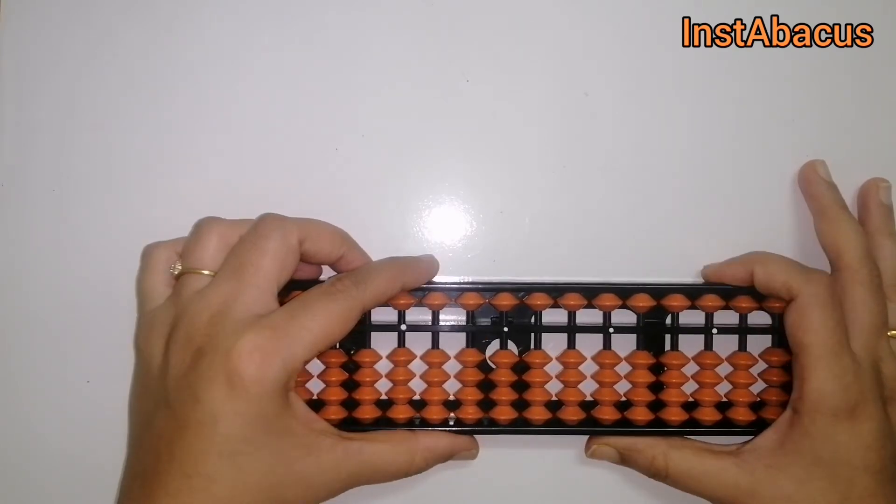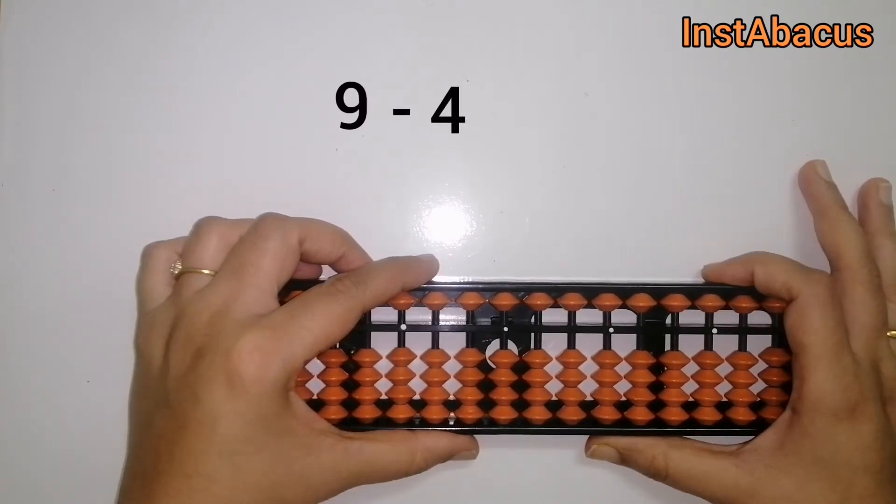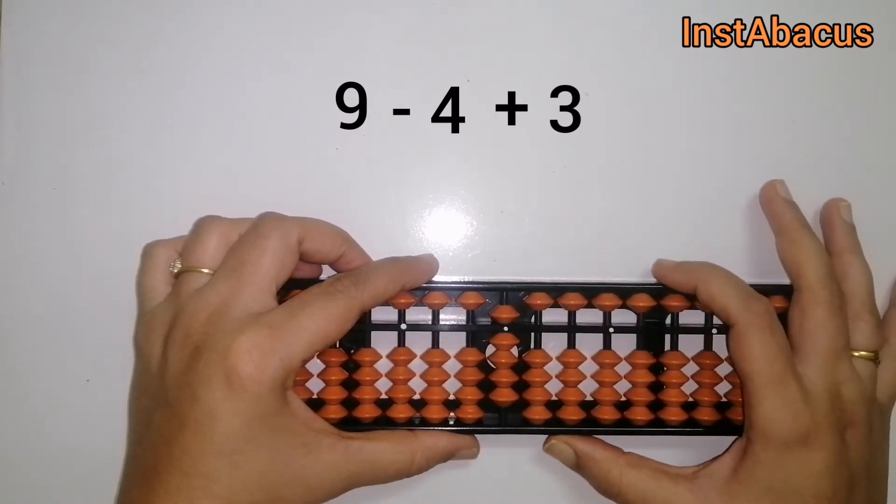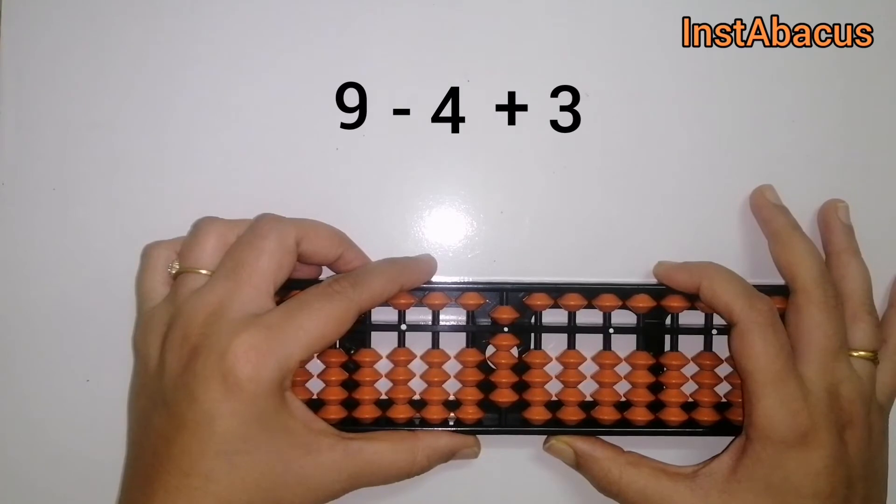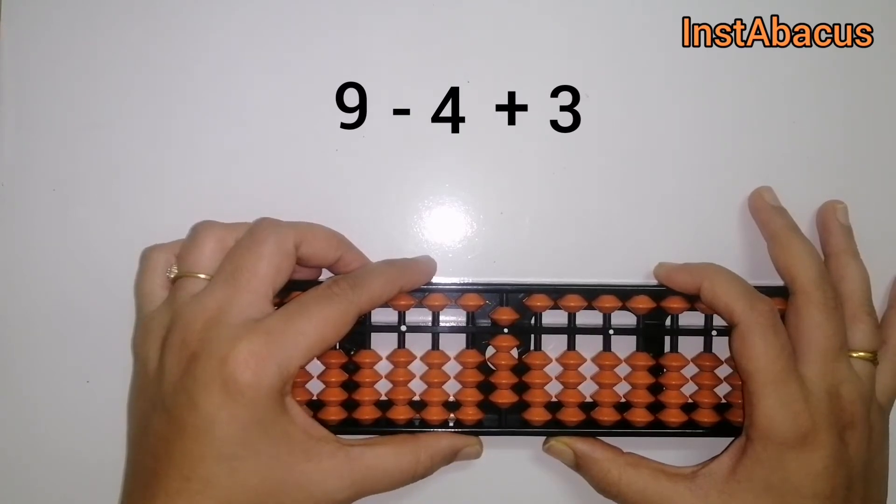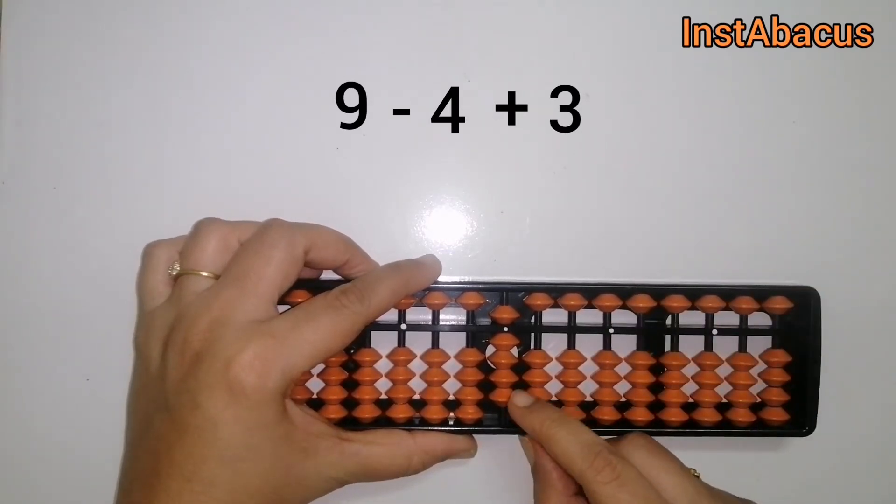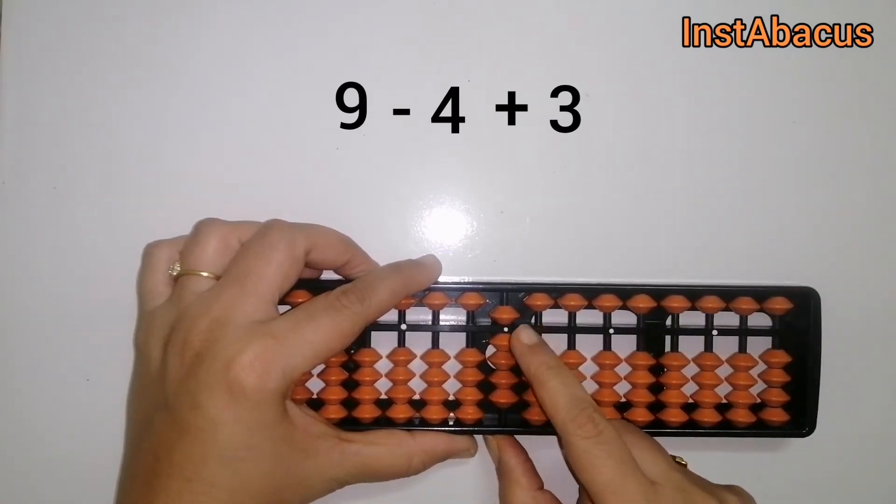9 minus 4 plus 3. Okay, so this is 9 on our abacus and from this we are going to subtract 4 and for that we are going to move these earthly bits away from the answering bar.